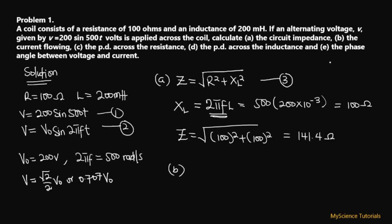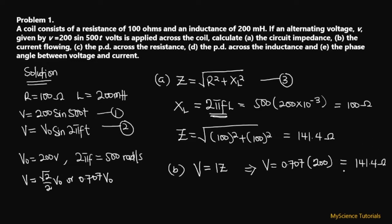Now the next aspect is finding the current flowing through the circuit. We know V_rms = IZ. We know Z = 141.4 ohms but we need our RMS voltage. Using V_rms = 0.707 × V₀ = 0.707 × 200 = 141.4 volts. Now that we have the voltage, we can find the current.